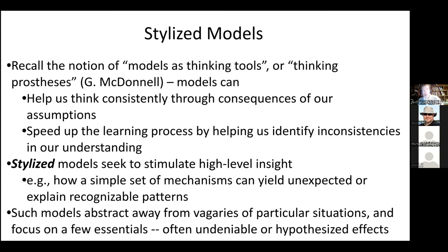People have preferences for who they want to live with, and if those preferences are not met, they move to a place that does match those preferences — a simple idea — and we let it play out in Schelling's segregation model. These models can stir up the learning process that helps us identify inconsistencies in our thinking. It says: if you have just that, look what results in ways we never would have anticipated.